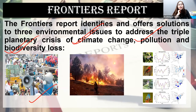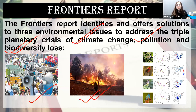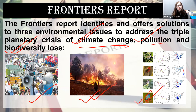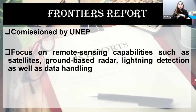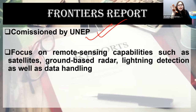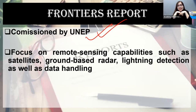Wildfires and forest fires are creating problems for different species. Phenological shifts are happening because of climate change and other associated conditions. This Frontiers Report is released by UNEP, and all these environmental issues are negative. Therefore, the report has put forward certain suggestions.